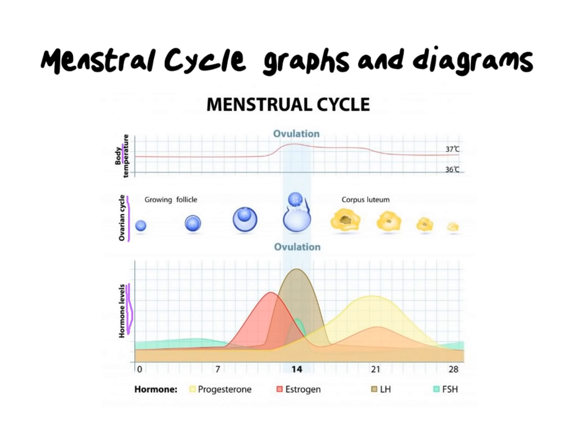The easiest way to learn from diagrams with lots of layered information is to take a ruler and cover the rest of the page, then slowly drag it from day zero to day 28. This gives you a nice overlap of what's happening at each stage.